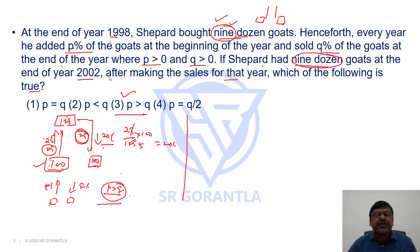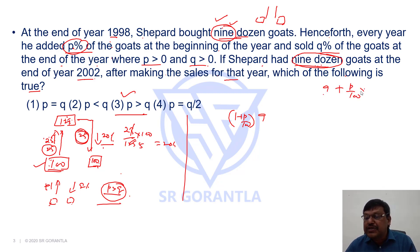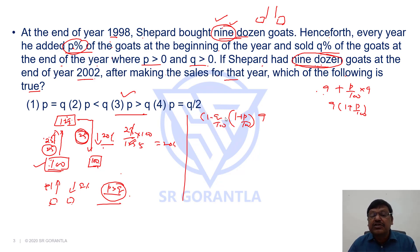Alternatively, let us put this in an equation. He started with 9 dozen goods and increased it by P percent. If you increase by P percent, the result will be (1 + P/100) times 9 dozen. Then you are selling Q percent, meaning the number of goods comes down by Q percent, so it is multiplied by (1 − Q/100).